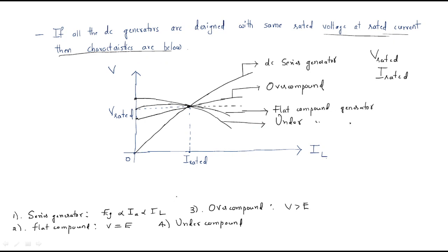Next, the shunt generator. It generally starts from a lower value. When the load current increases, the terminal voltage decreases. That is the characteristic of the shunt generator.